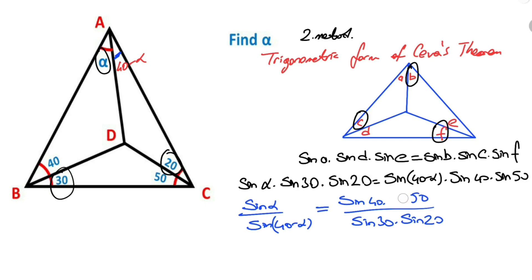So can we write cosine 40 instead of sine 50, right? Can we write 2 instead of 1 over sine 30. And we know that 2 times sine 40 times cosine 40 equals sine 80.